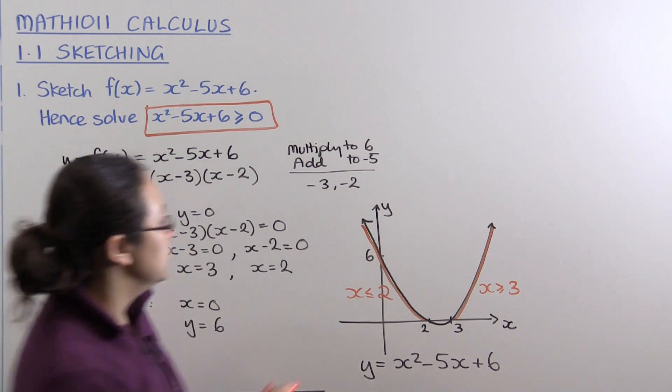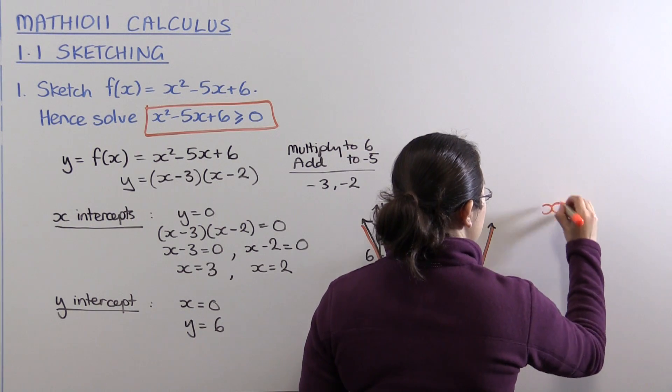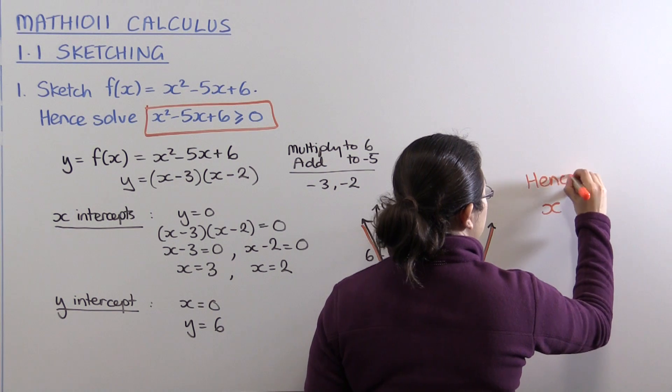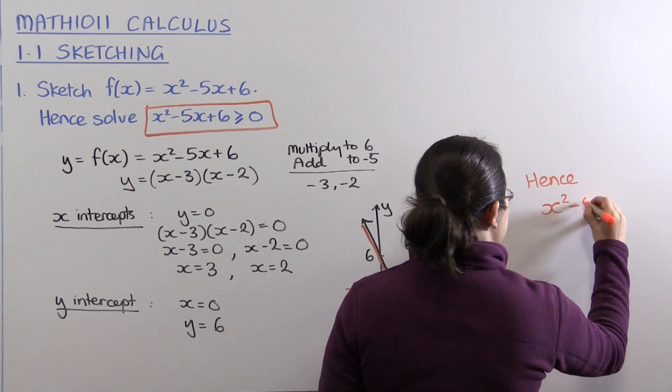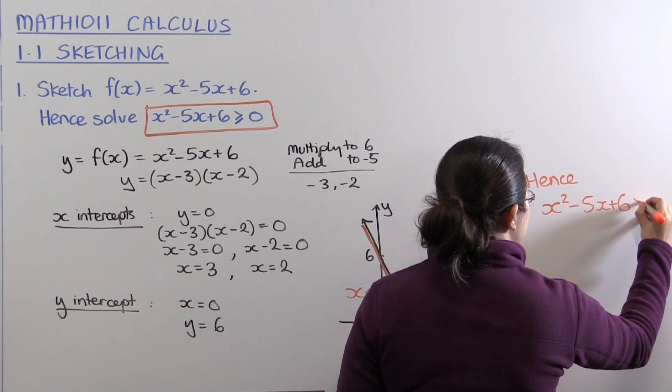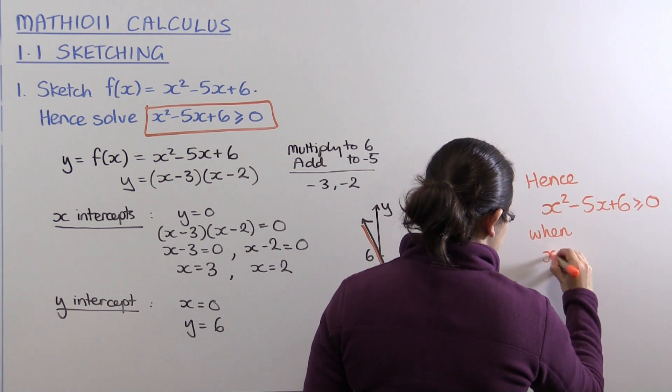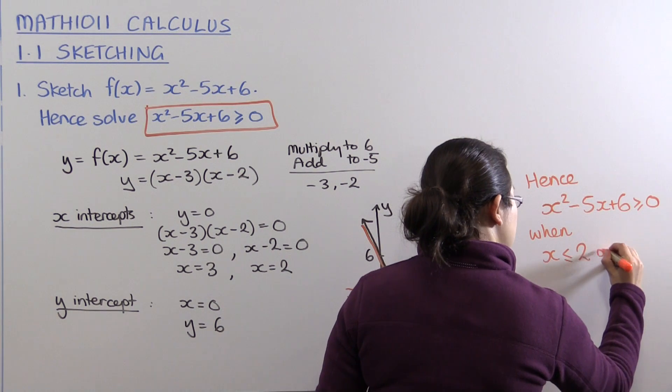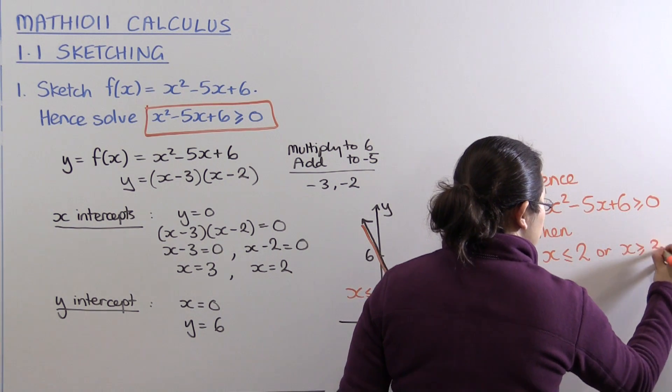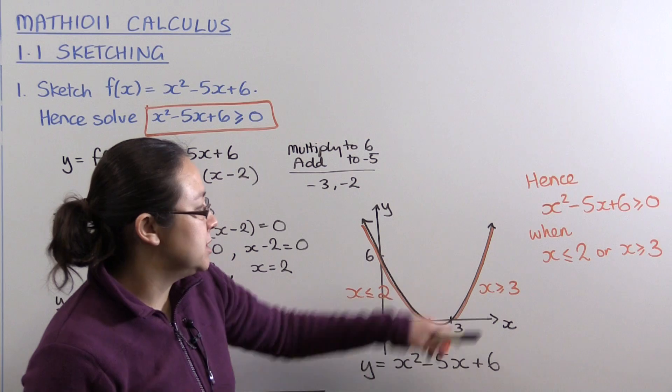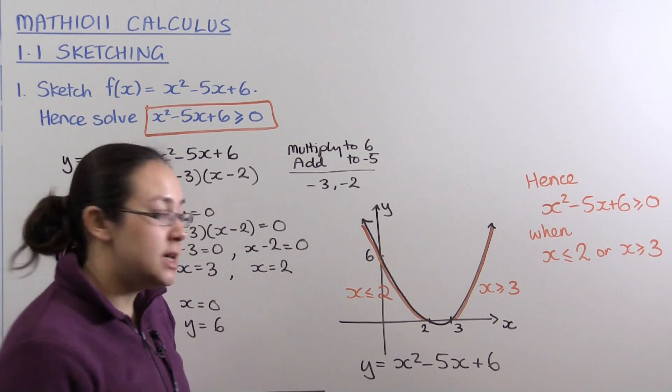Now we can write down our solution. Hence, x² - 5x + 6 ≥ 0 when x ≤ 2 or x ≥ 3. We can write this in set notation.